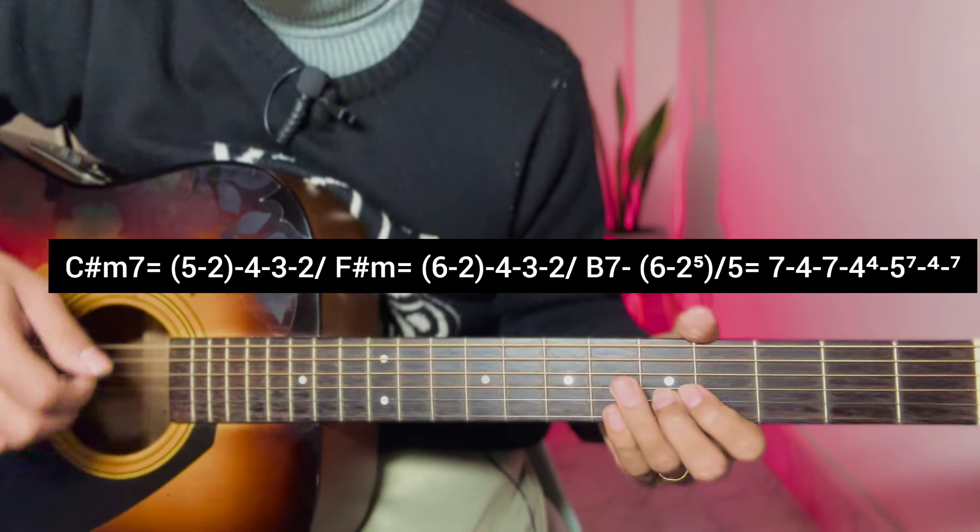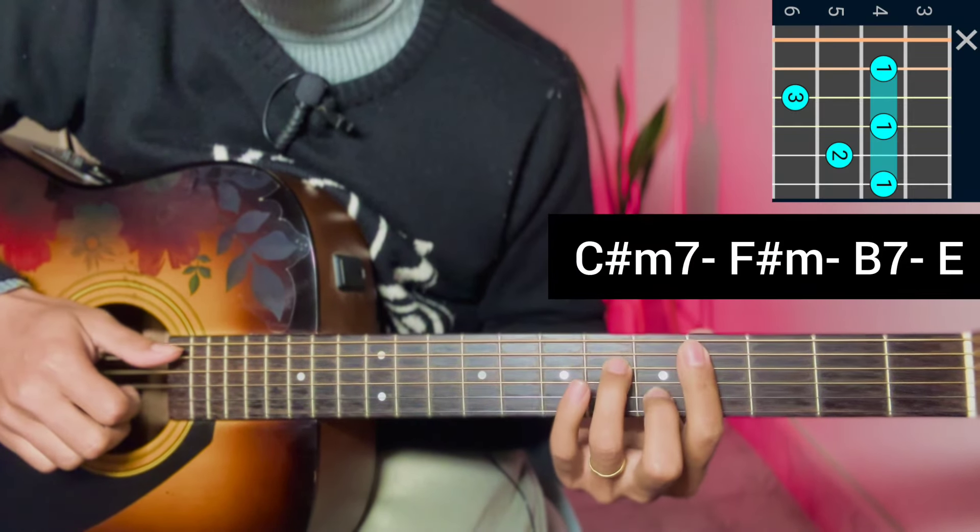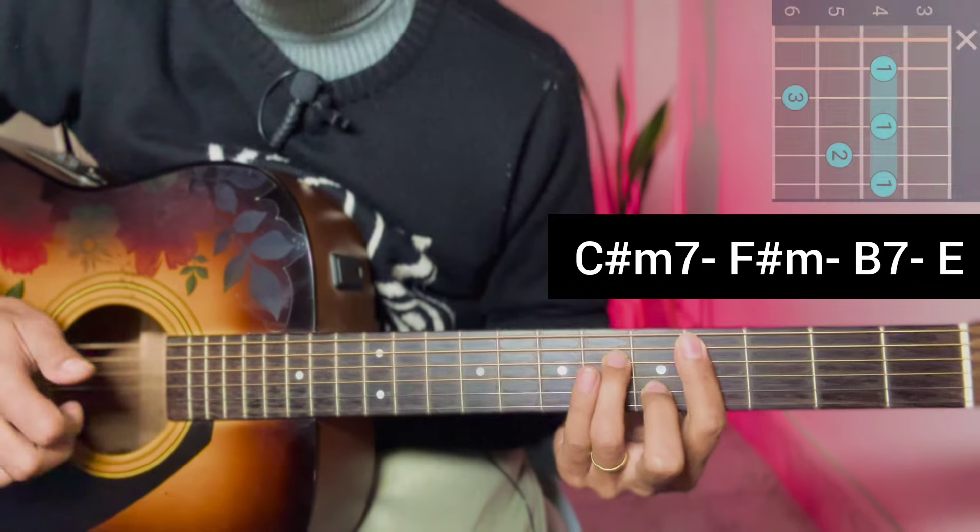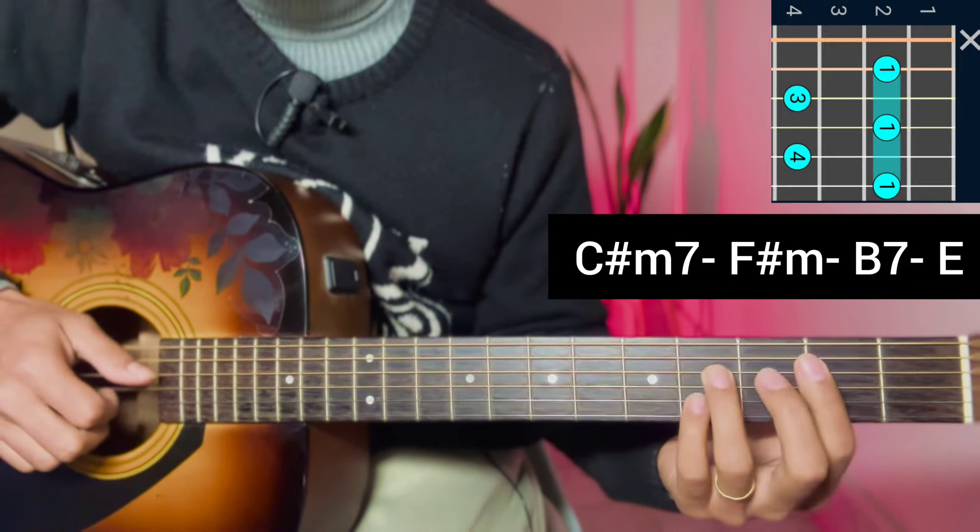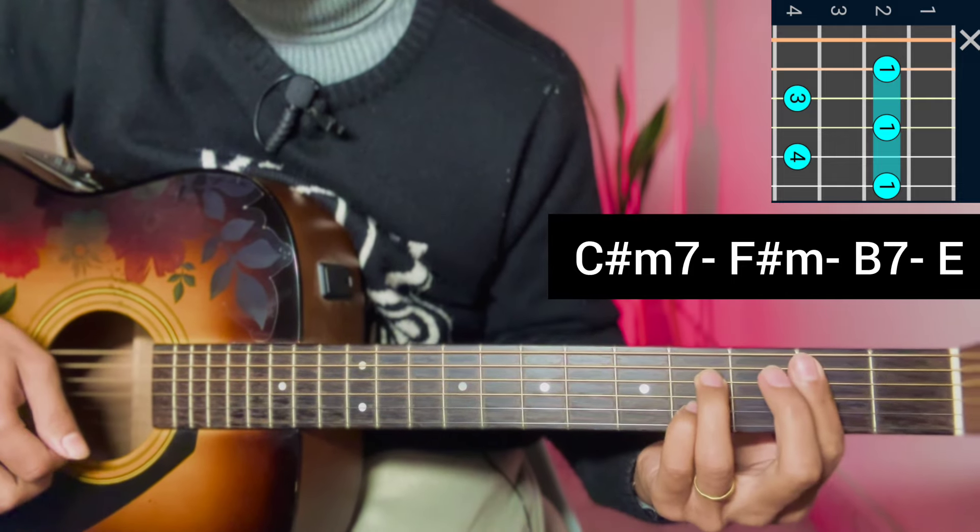This is the chord of the string. And the strumming chord is normal C sharp minor 7 chord, normal F sharp minor bar chord, B7 chord, E major chord.